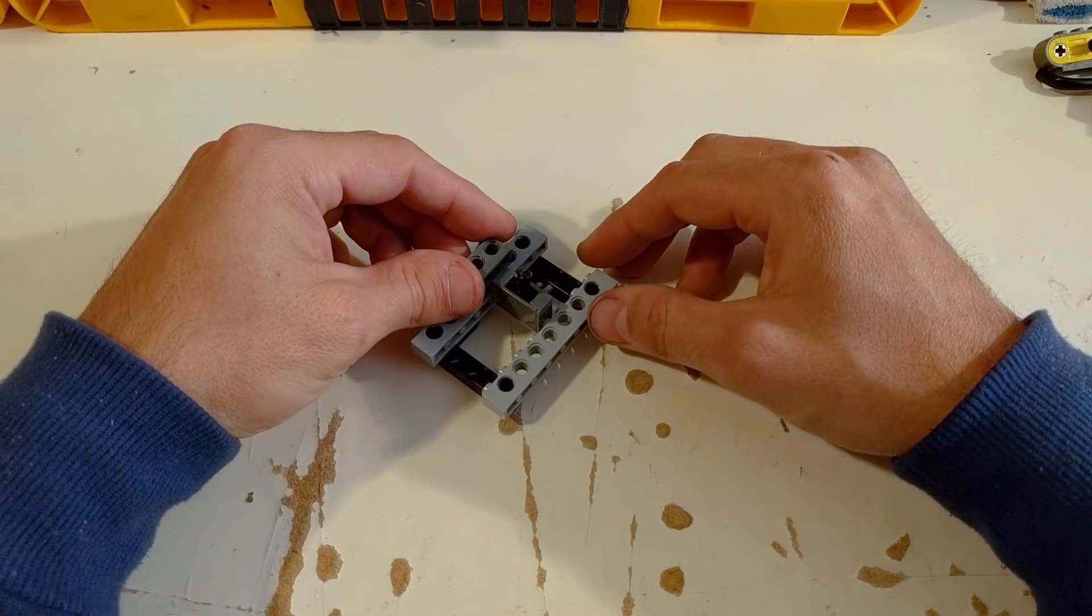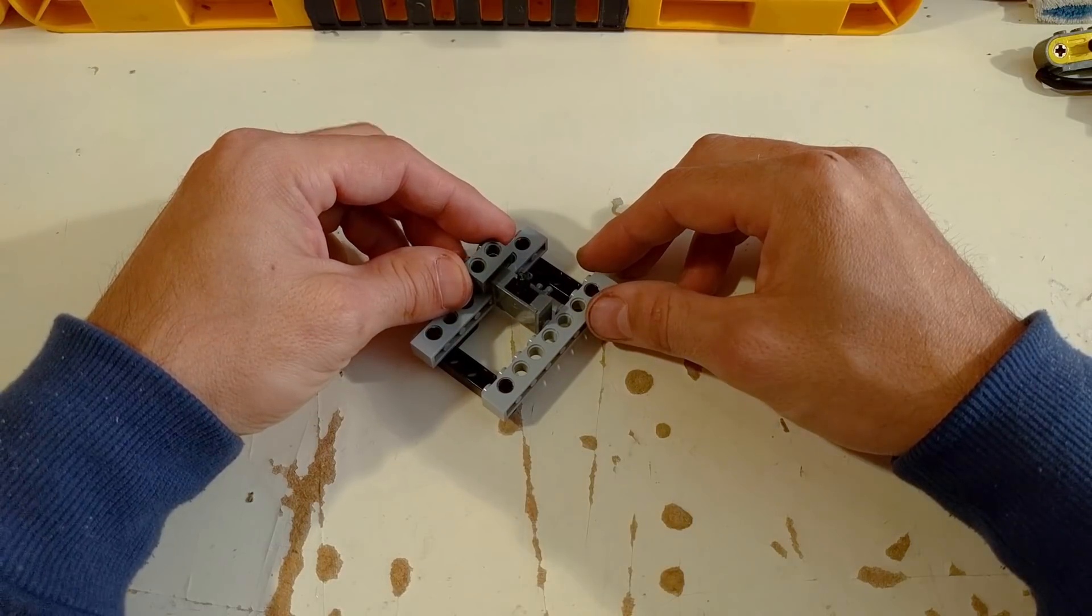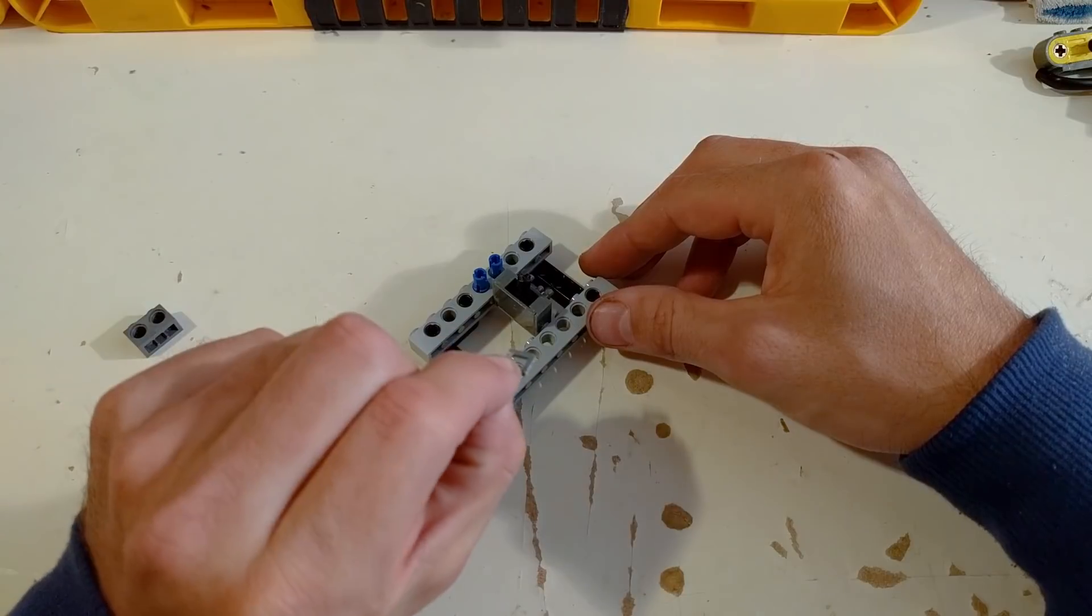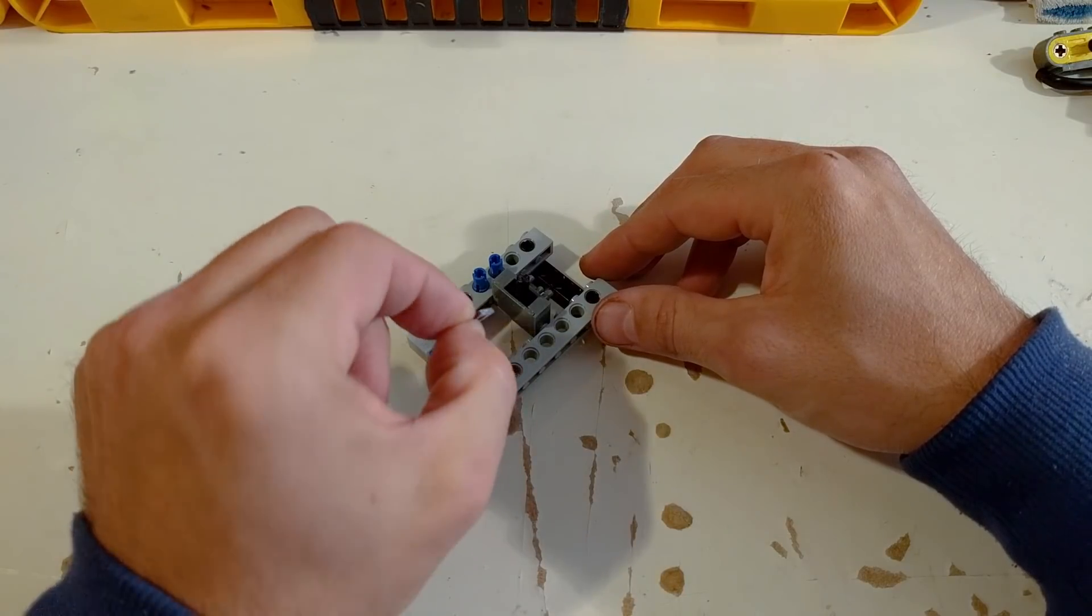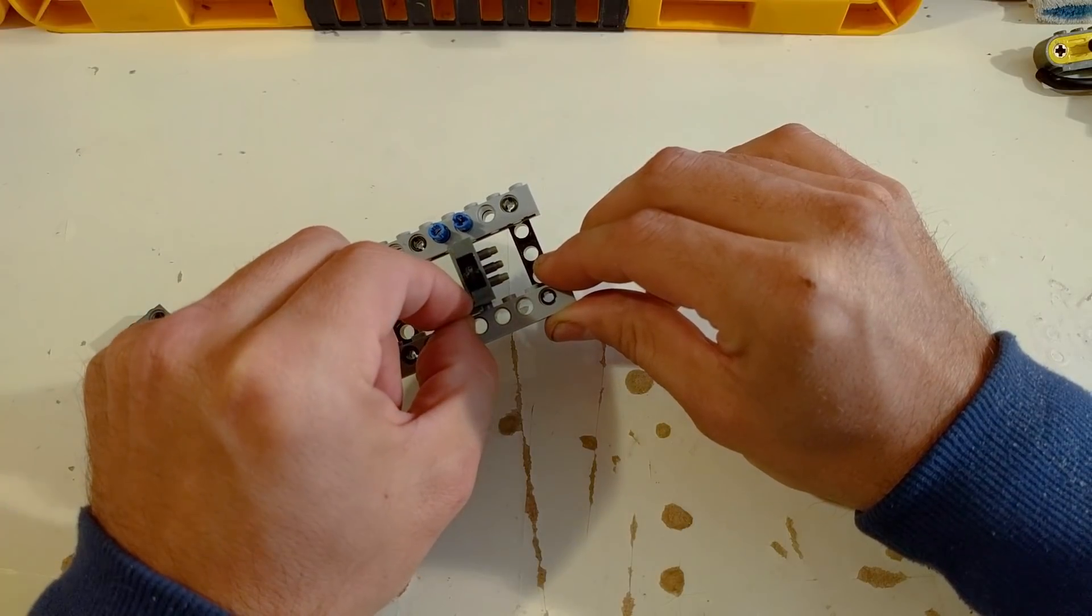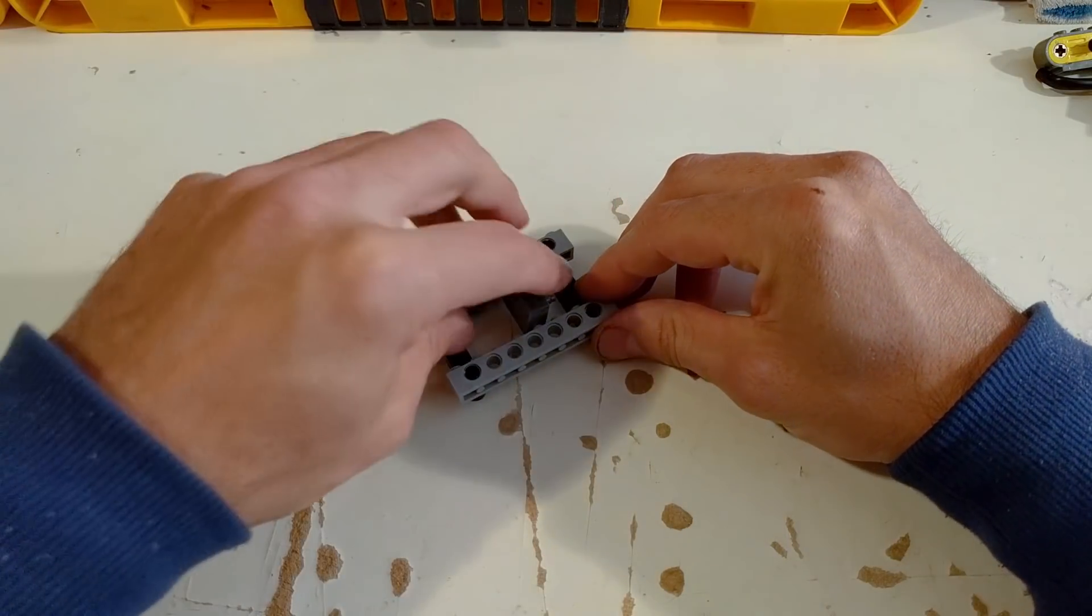What we do, we glue this brick in the front and we glue this part that we modified here, here on the bottom. Let me show you how to do it.